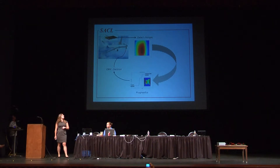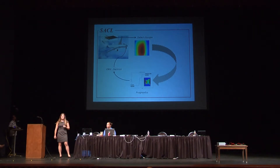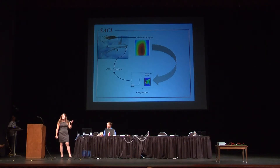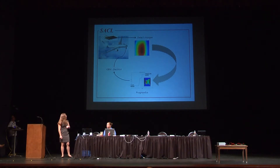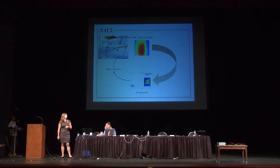Traditional SHM systems, as we all know, we want to detect changes in the structure, and the goal is to be able to give some information to prognostics so we can have lifetime estimation and give that information to condition-based maintenance to make better decisions. But the question that comes up is: what do these changes mean? We need to know damage type and damage quantity — how much damage there is.